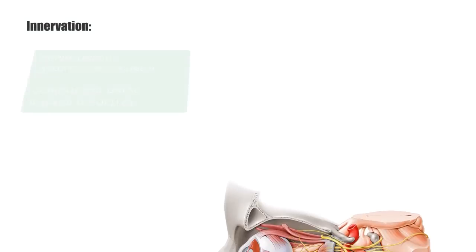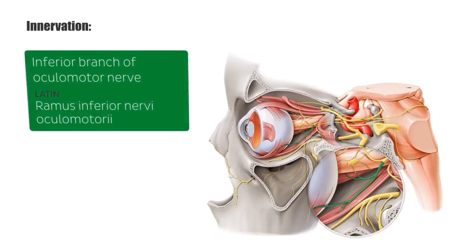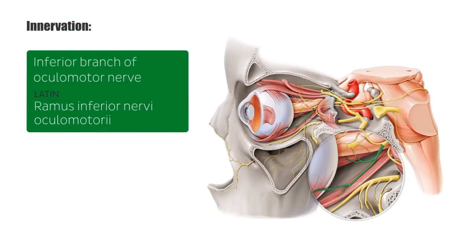Nerve supply to the inferior rectus muscle is provided by the inferior branch of the ocular motor nerve, cranial nerve 3, highlighted in green in the image. The ocular motor nerve innervates 4 of the 6 extraocular muscles.